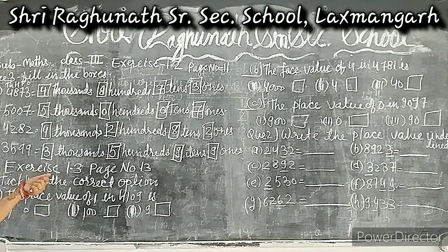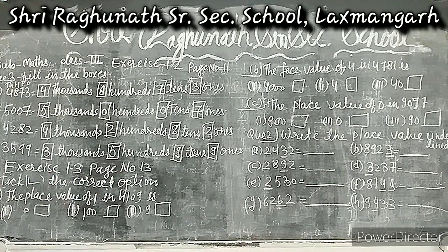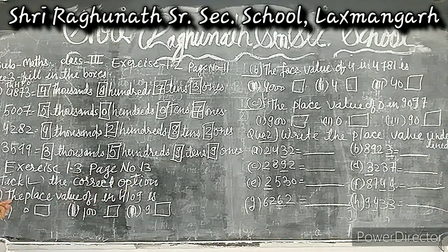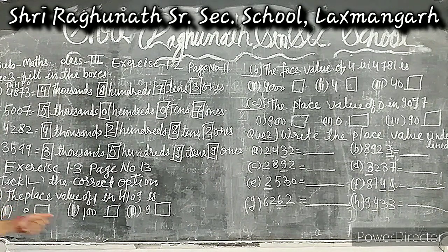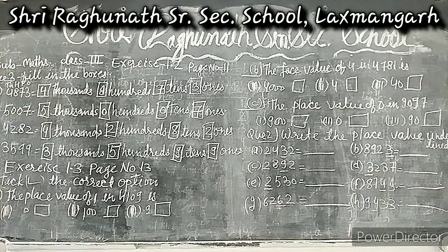Now Exercise 1.3 — it is on page number 30. The first question says: write the correct option — tick the right answer. We have to put a tick on the correct answer. The question is asked, three answer options are given, and we have to tick the right one.